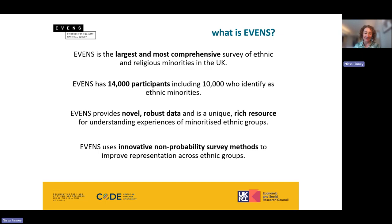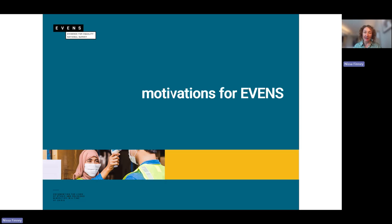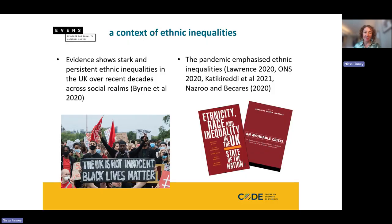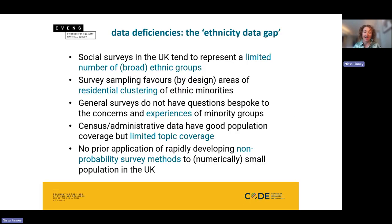EVANS used a very innovative, non-probability approach to getting better representation of ethnic minorities in the survey. EVANS was motivated by a context of ethnic inequalities in the UK that have been shown to be stark and persistent, and many commentators have argued that these were exacerbated during the pandemic. Researchers were calling for attention to the ethnicity data gap — problems with the data available — and this was the second motivation for EVANS: to try to address this gap. Existing surveys tend to represent only a limited number of broad ethnic groups, and sampling for ethnic boost samples tends to be in areas of residential clustering, creating certain biases that EVANS tries to address.